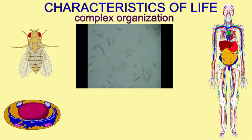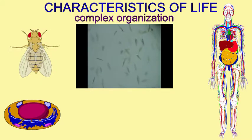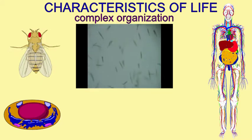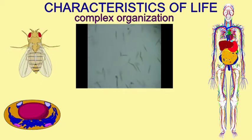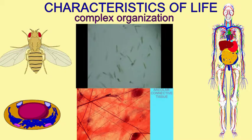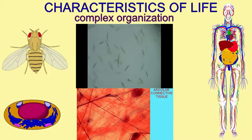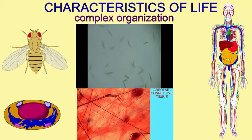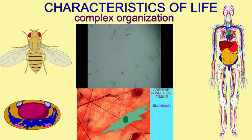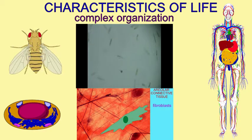In this organization, all living things are made of cells, the most basic unit of life. Multicellular organisms, like flies and humans, have more levels of their complexity.